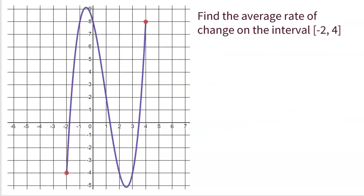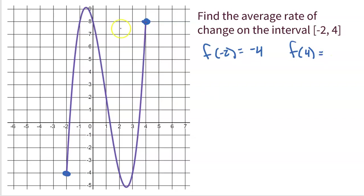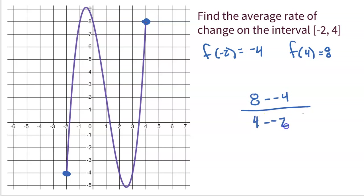Let's look at another example. We're looking at the average rate of change from negative two to four. We see the beginning at negative two and the end of the interval at four. The first thing we do is find the output values at negative two — look at the graph, the output for negative two is negative four. What is the output for four? Look at the graph — we get eight. So to find the average rate of change, we subtract the outputs on top: eight minus negative four. Subtract the inputs in the denominator: four minus negative two. On top we get positive twelve, on the bottom we get positive six. So the average rate of change is two.